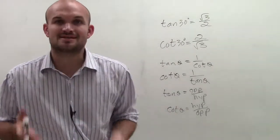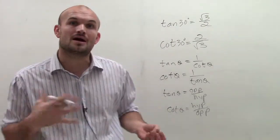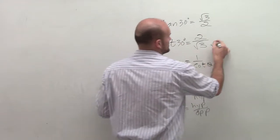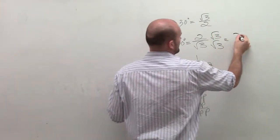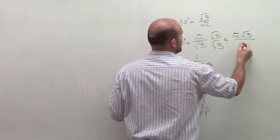Now remember, we need to rationalize the denominator. We don't want to have our radical on our bottom. So I'm going to multiply by the square root of 3 over the square root of 3. And therefore, I get 2 times the square root of 3 over 3.